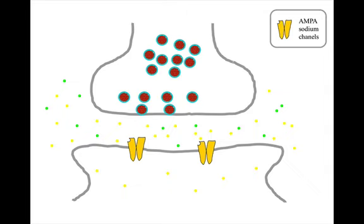These channels are closed unless they're bound by a molecule of the glutamate neurotransmitter, with the binding taking place at a specific site.